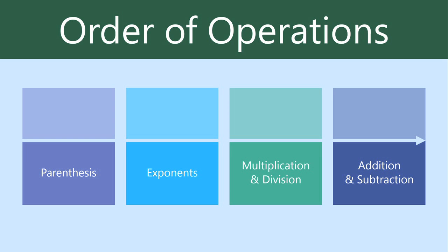Excel uses a set of rules called the Order of Operations, which you might remember from math class. The Order of Operations determines which parts of the formula to calculate first. The very first thing that you calculate are the items in parentheses. Then, if you have any exponents, you'll calculate those. Next is multiplication and division. And finally, addition and subtraction.